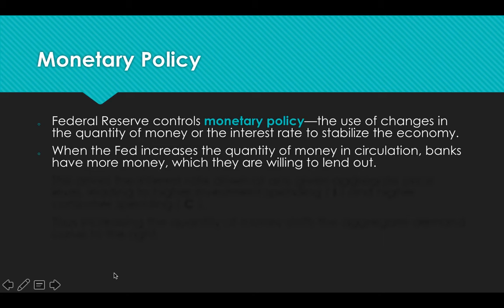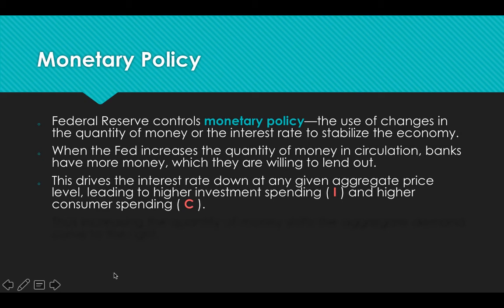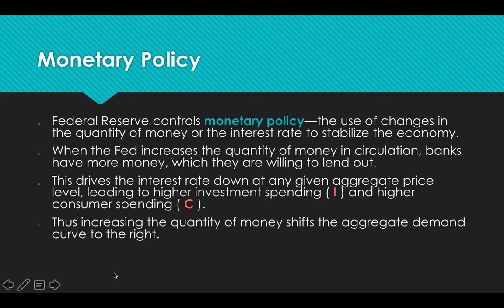When the Fed increases the quantity of money, banks have more money, and what do banks want to do? They want to lend it out — that's how banks make money because they make interest. You should know from supply and demand that when there's more of something, the price goes down, and the price of money is the interest rate. So when the Fed increases the money supply, interest rates go down, and at lower interest rates, consumers are going to spend more on interest-bearing purchases and businesses are willing to invest more. Lower interest rates lead to higher investment and higher consumption spending, shifting the aggregate demand curve to the right.